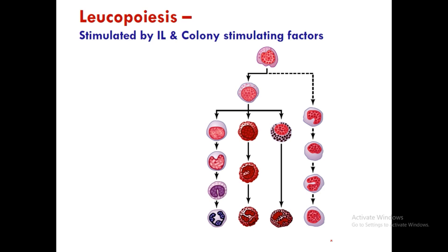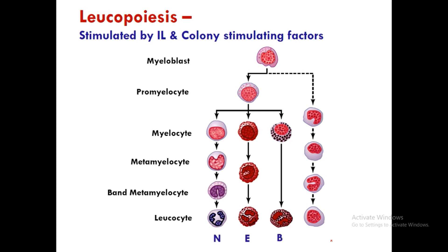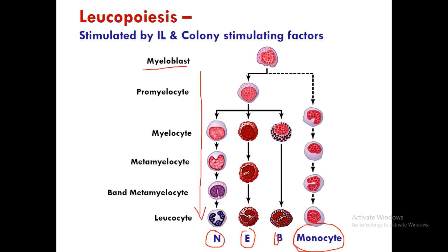Leukopoiesis is stimulated by interleukins and colony-stimulating factors. The developmental stages are: pluripotent hemopoietic stem cell → myeloid stem cell → myeloblast → promyelocyte → myelocyte → metamyelocyte → band metamyelocyte → leukocyte (neutrophil, eosinophil, or basophil). Monocytes follow a separate pathway from the monoblast.